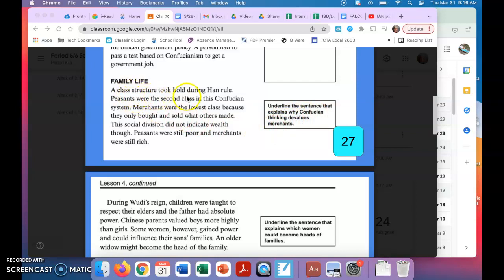A class structure took hold during Han rule. Peasants were the second class in the Confucian system. Merchants were the lowest class because they only bought and sold what others made.